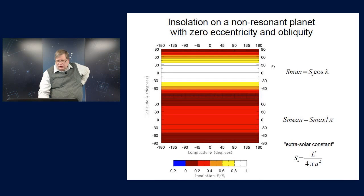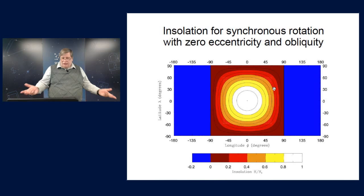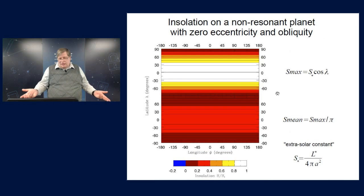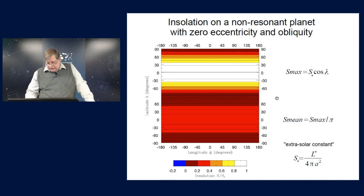And the mean insolation behaves similarly, except you divide the maximum insolation by pi to get the mean. That's if the planet is not resonant.